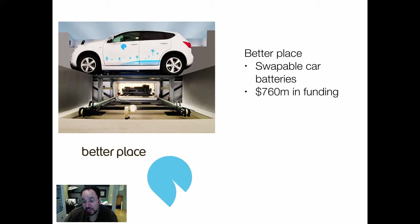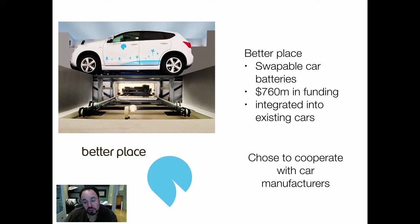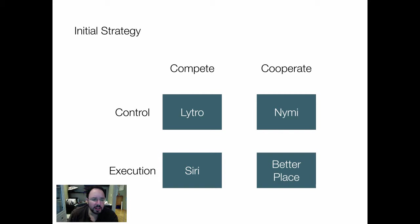Better Place attracted about $760 million in funding — there's a lot of VC funding for energy-related ventures. Their business model was to integrate this technology into existing cars rather than make a completely new car, which of course we know Tesla was doing. In other words, they chose to cooperate with car manufacturers. From here you can see some of the different initial strategies chosen by the four companies outlined.